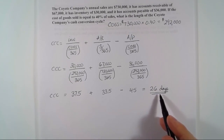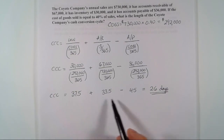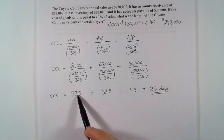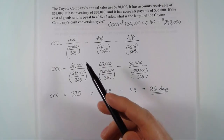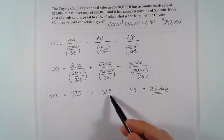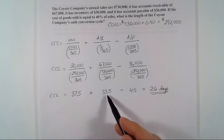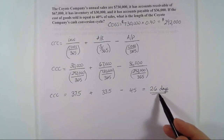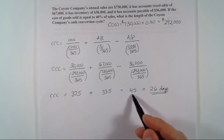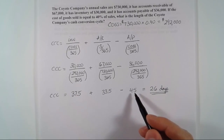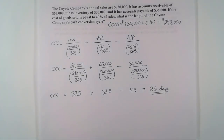As a general principle, a shorter cash conversion cycle is preferred. However, shrinking the inventory conversion period risks running out of inventory, and shortening the days sales outstanding by tightening credit terms could cost sales. Lengthening the payables deferral period often means missing early-payment discounts, which are very costly on an annual basis. So the benefits of a shorter cycle must be weighed against these downsides.